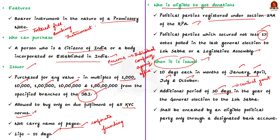Coming to the redemption of bonds, the bond shall be encashed by any eligible political party only through a designated bank account with the authorized bank. I hope now you are able to find the answer for what is an electoral bond and how it brings transparency. To have a strong hold over current affairs, do watch Shankar IAS Academy's Hindu News Analysis regularly.